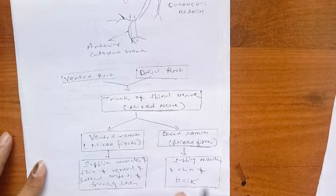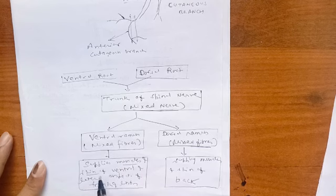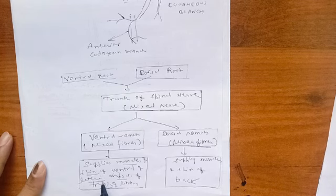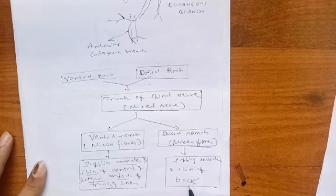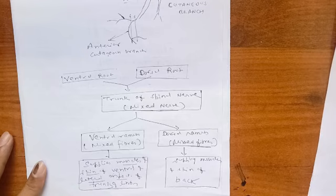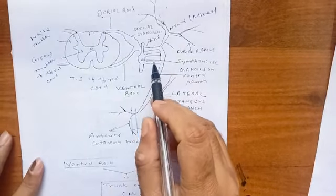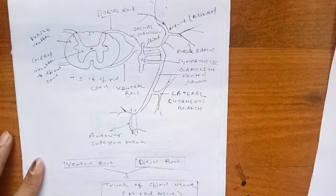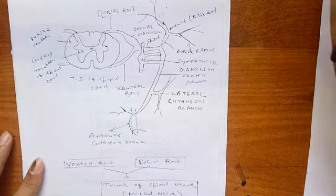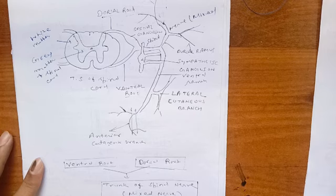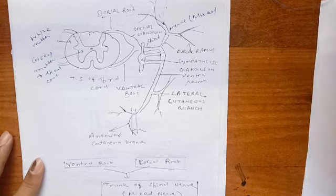The ventral rami supply the muscles and skin of the ventral and lateral aspect of the trunk and the limbs. The dorsal rami supply the muscles and skin of the back. From the dorsal root, the dorsal root ganglion arises, which contains pseudounipolar neurons.